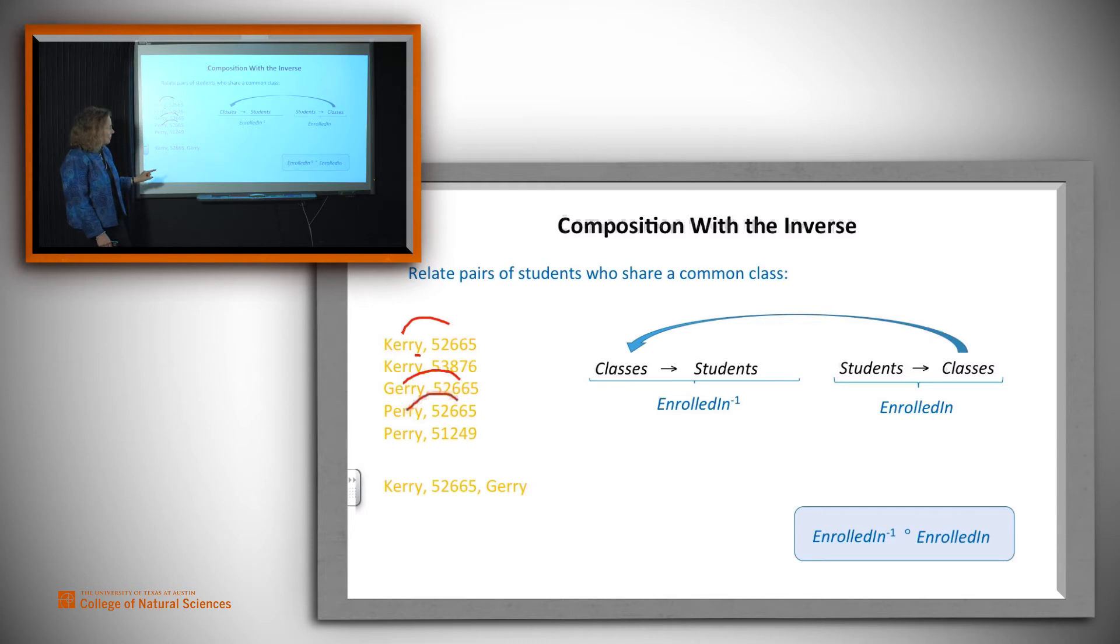And so the composed relation is going to take Cary to 52665 to Jerry, and thus produce the element Cary-Jerry, which we can write over there. Now we can do this for all the other combinations.